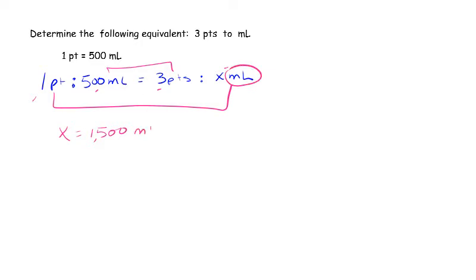We can also set this up as a fraction, in which case we would put 1 pint on top, put 500 mL on the bottom. On the other side, we would put 3 pints, because since we started the first side with pints on the top, we need to keep pints on top on the second side, and put x mL on the bottom.